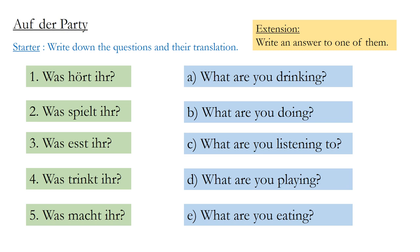Number 1: Was hört ihr? - What are you listening to? Number 2: Was spielt ihr? - What are you playing? Number 3: Was esst ihr? - What are you eating? Number 4: Was trinkt ihr? - What are you drinking? Number 5: Was macht ihr? - What are you doing?